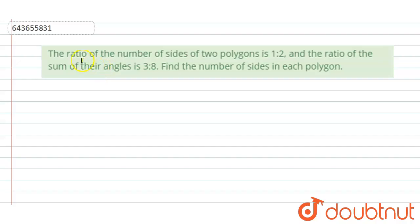Hi, welcome to this video. The question is: the ratio of the number of sides of two polygons is 1:2 and the ratio of the sum of their angles is 3:8. Find the number of sides in each polygon.